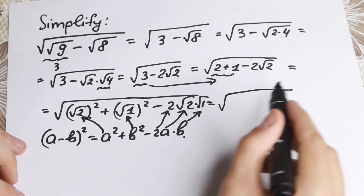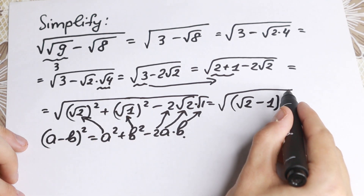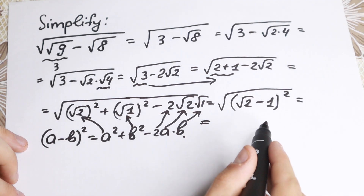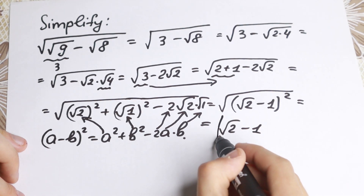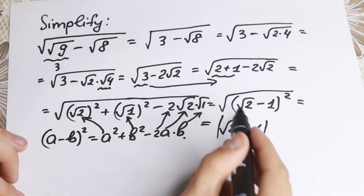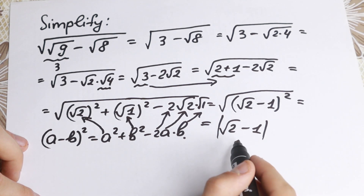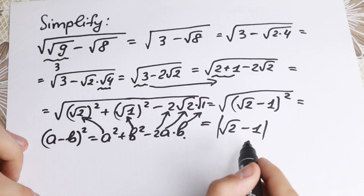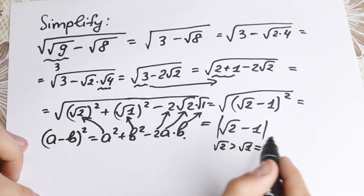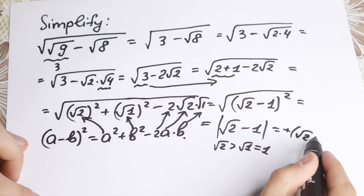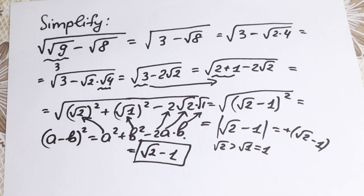So as a result, we have the square root of (a minus b) squared, where a equals square root of 2 and b equals square root of 1, which is 1. So this becomes the square root of (square root of 2 minus 1) squared. A lot of students make the mistake of just cancelling the square root sign and the square, but you need to put absolute value brackets, because you don't know the sign of the expression. Since square root of 2 is approximately 1.4, which is greater than 1, this expression is positive. So the absolute value gives us positive square root of 2 minus 1, and the final answer is square root of 2 minus 1.